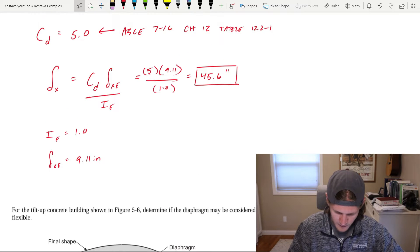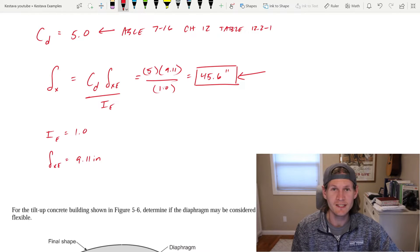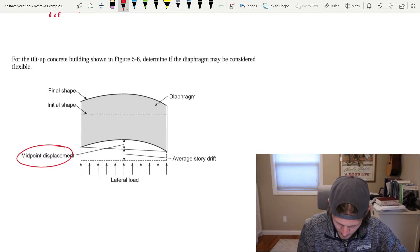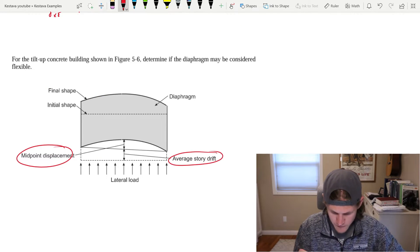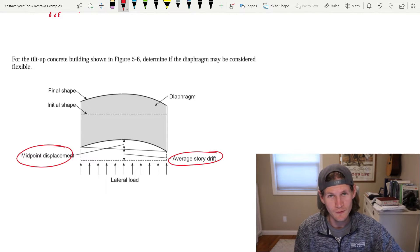If we scroll back up just a little bit, you'll see in our previous problem, we found the midpoint displacement of our wood diaphragm, which was 45.6 inches. But now we need to find the average story drift in order to compare that to determine whether our diaphragm is flexible or rigid.